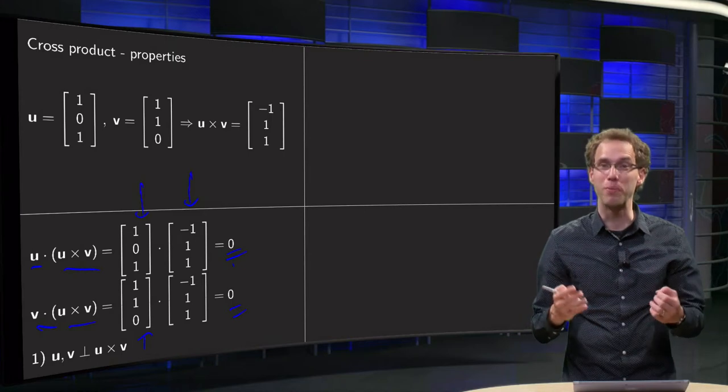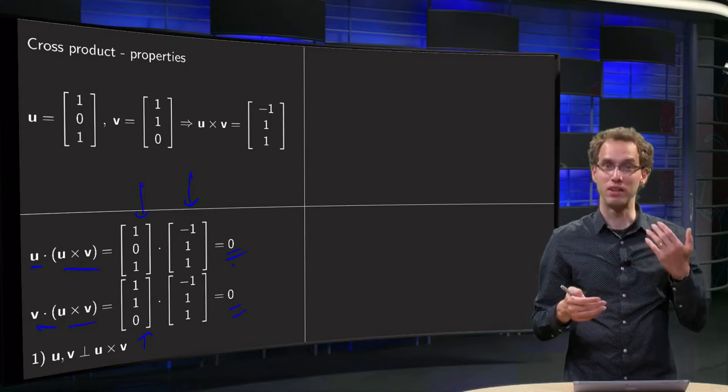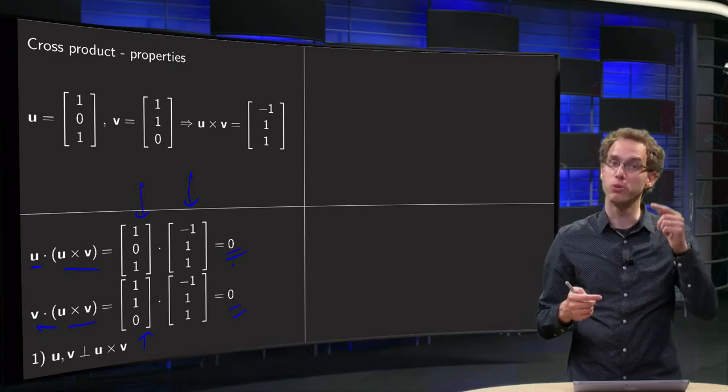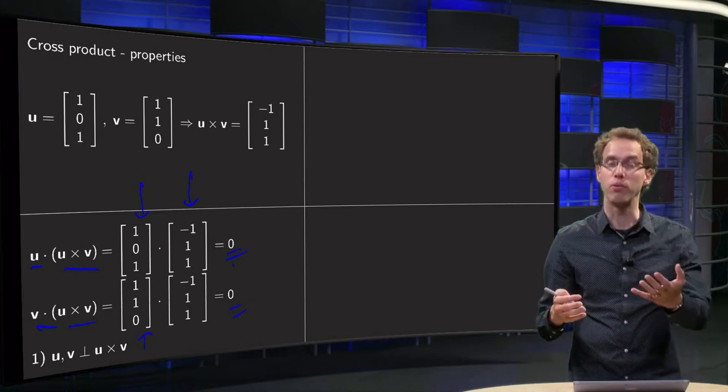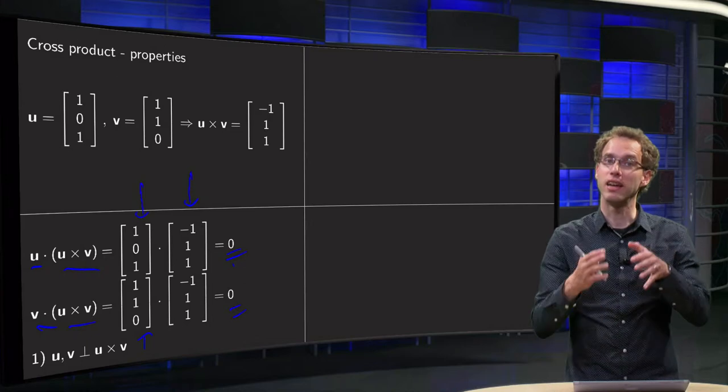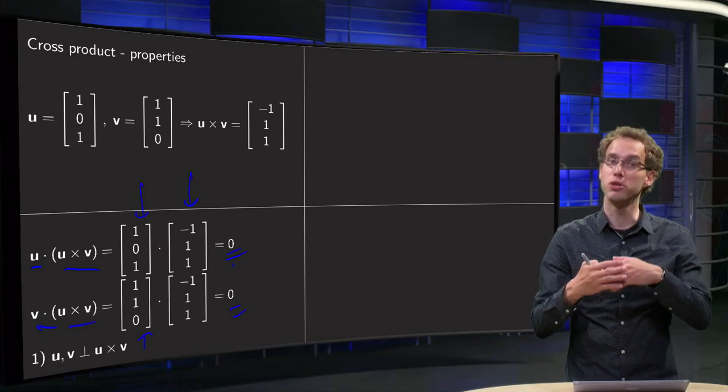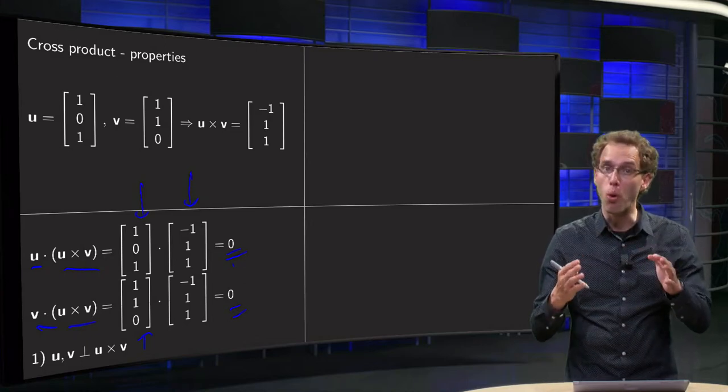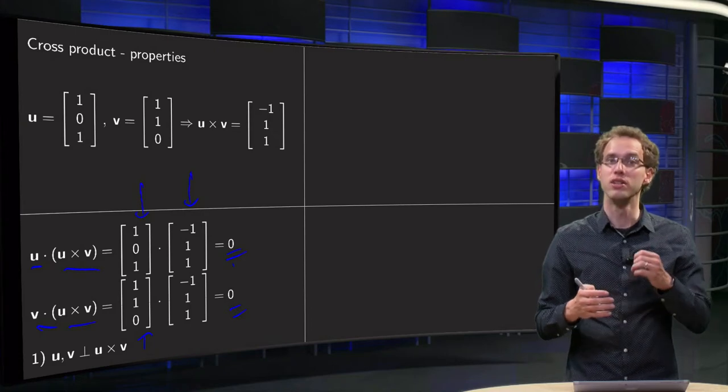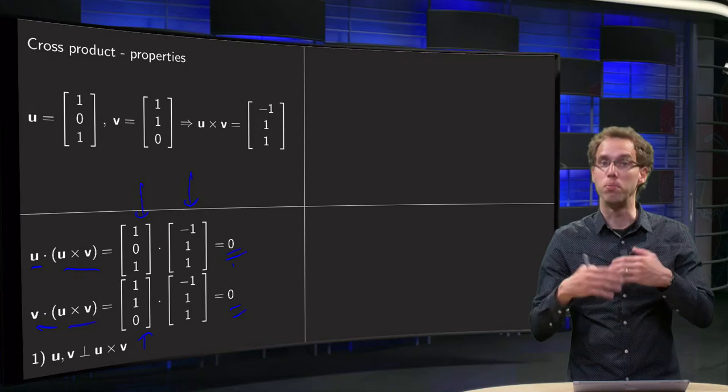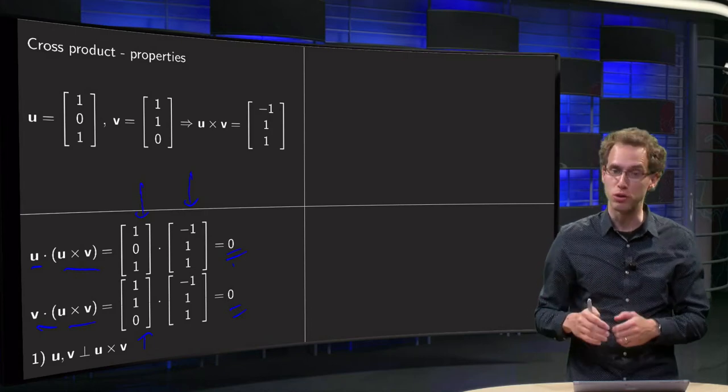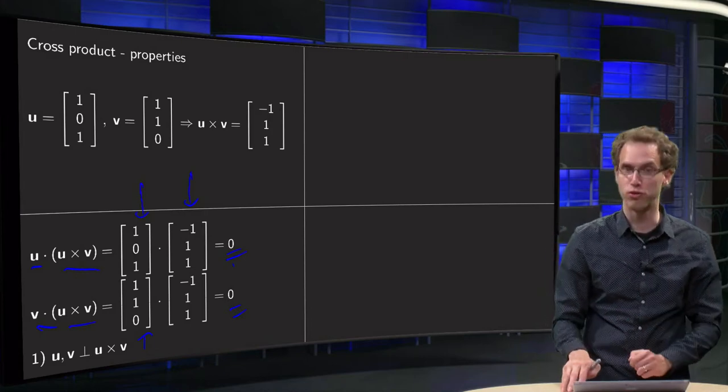You can prove this property in general by writing down u equals u1, u2, u3, v equals v1, v2, v3. So we write down what the cross product is and then take in general the inner products. And then you see that this property holds for all vectors u and v. So we always have that u and v are both orthogonal to their cross product. That's the first useful property.